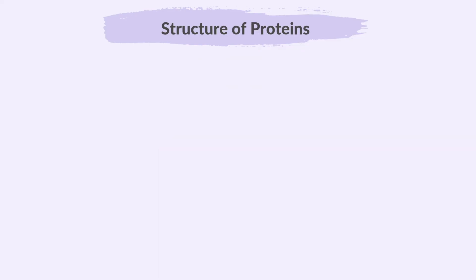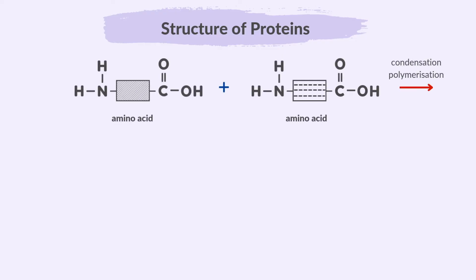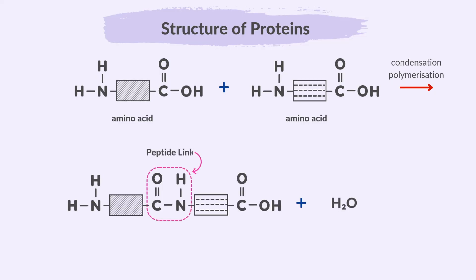Let's learn how to draw the structure of proteins. Proteins are formed through the condensation polymerization of amino acids, which contain both amine and carboxylic acid functional groups. Proteins are formed when amino acids link together through peptide links, creating a long chain. In polyamides we called the link an amide link; in the case of proteins, these amide links are called peptide links. The formation of a peptide link involves a condensation reaction between the amino group of one amino acid and the carboxyl group of another, releasing a molecule of water.